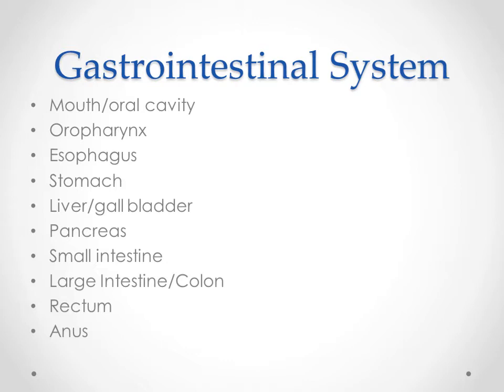We can't forget about our accessory organs, like the liver and the gallbladder. The liver produces bile, the gallbladder stores the bile, and bile helps to emulsify fat — putting it into solution so that it can be properly absorbed by the small intestine.